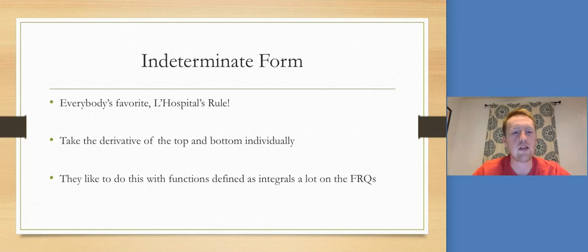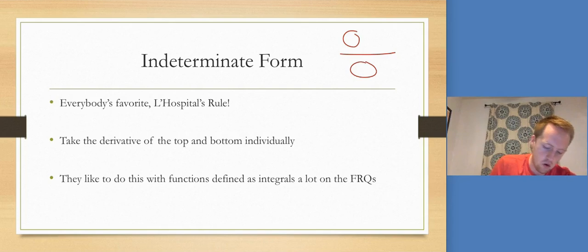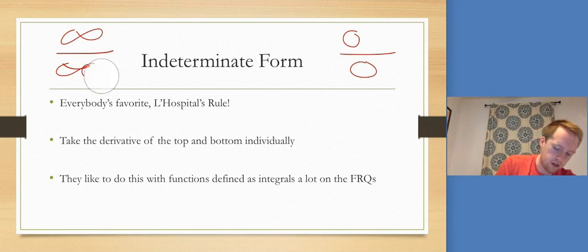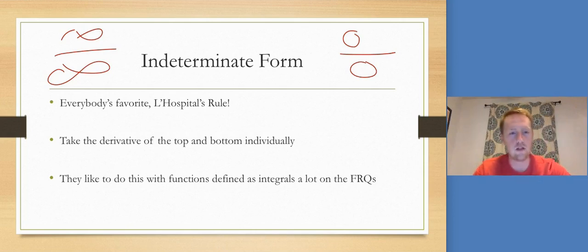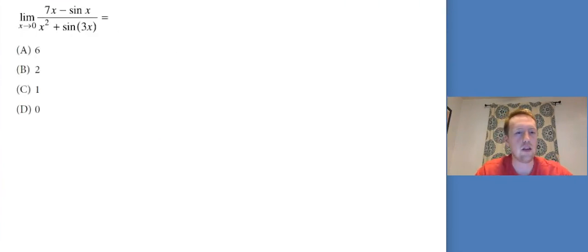Let's move into indeterminate form. We've got L'Hopital's rule. That shows up when we've got 0 over 0, or infinity over infinity. What we're going to do is take the derivative of the top and the derivative of the bottom. They like to do this with functions defined as integrals on the FRQs. In multiple choice, it's usually just functions, not quite as complicated.